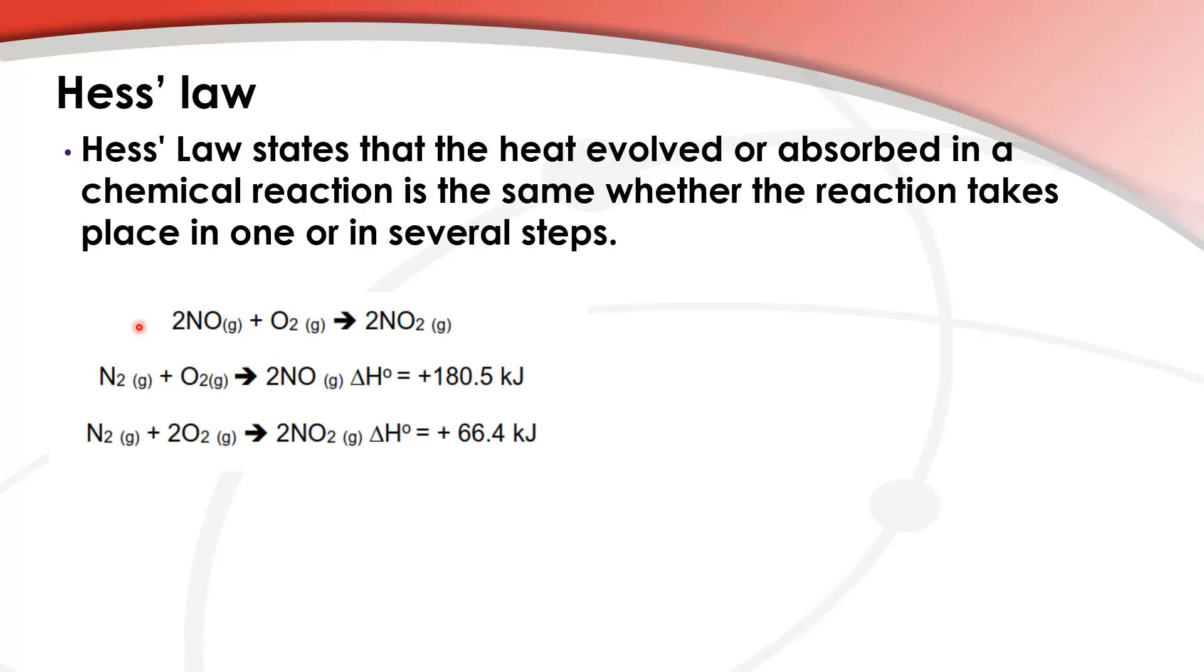So let's look at an example using Hess's law. Calculate the enthalpy change for this reaction here, the top equation, given these two equations here along with the enthalpy changes for the reactions. So what you have to look for is are the correct species on each side of the arrow? Well the top equation, this is the equation that we're aiming to get here.